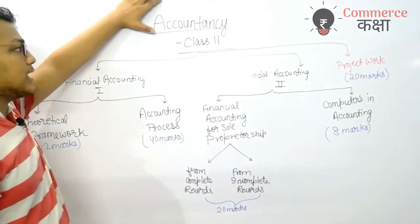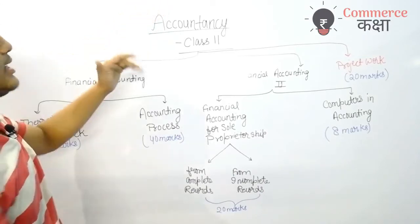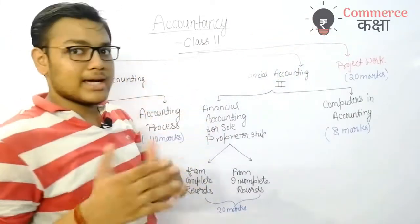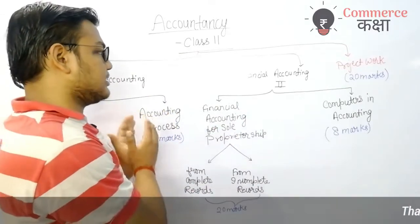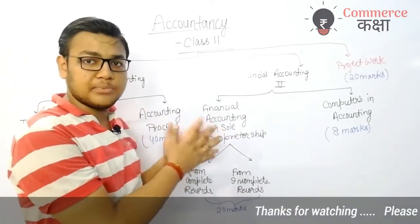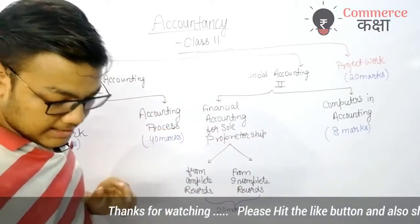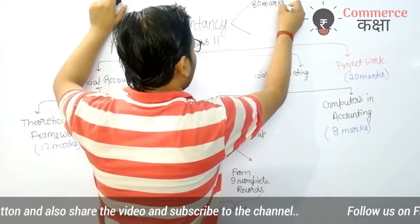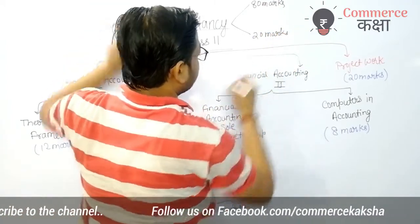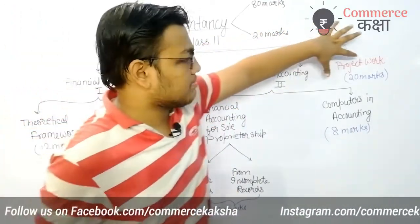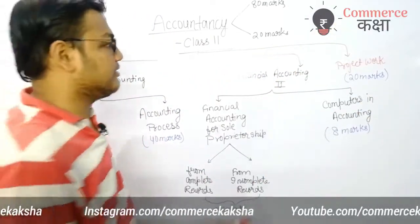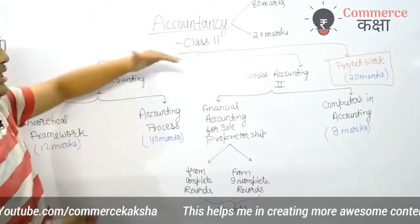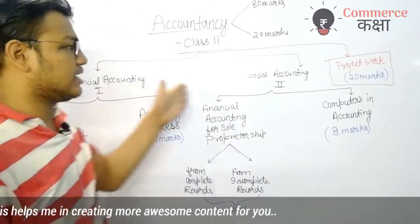Our Class 12 accounts are basically divided into two parts. There is a project work segment which I will discuss later. Basically, this is a marks distribution between chapters and heads. Accountancy is divided into two parts: 80 marks will be your exam and 20 marks will be your project. I will give you a dedicated video on how to do your project work. There are two parts: Financial Accounting Part 1 and Financial Accounting Part 2.